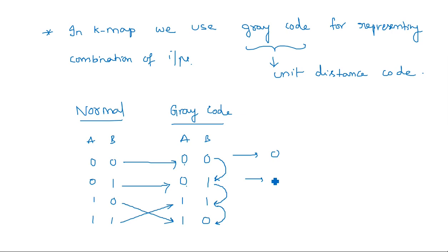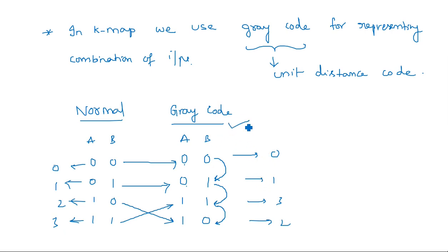In normal representation the order is 0, 1, 2, 3. In Gray code there is an exchange between 2 and 3, so the order becomes 0, 1, 3, 2. We follow this Gray code representation in the K-map. Now let me explain how to represent a two-variable K-map. When you go to three-variable and beyond, you will clearly understand how Gray code is being used.